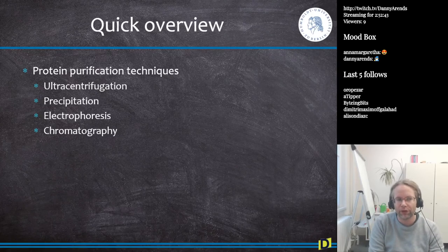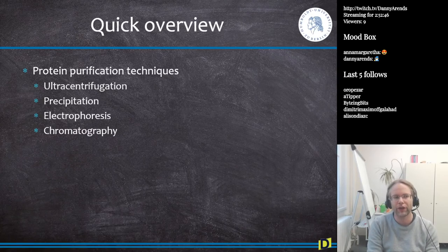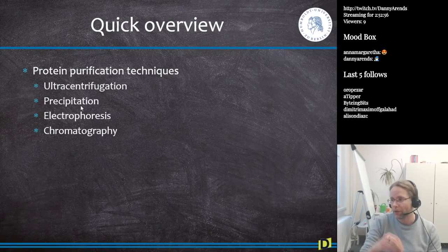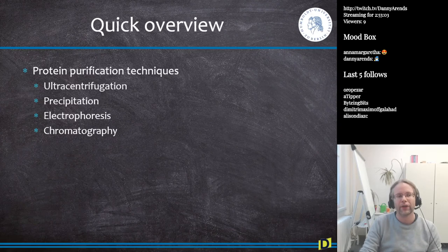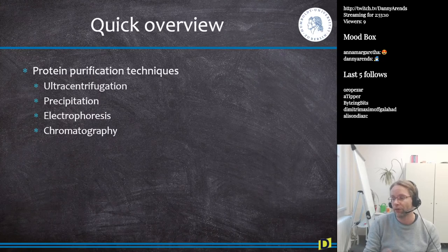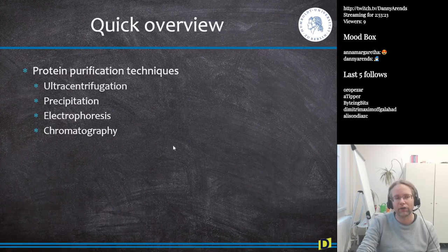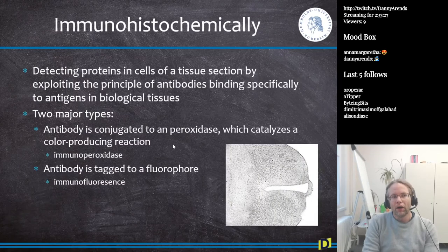To summarize protein purification: we have centrifugation — using gravity and spinning; precipitation — adding a substance so the protein comes out of the mixture; electrophoresis — pulling a protein through an electric field (which can be combined with isoelectric focusing to make a 2D gel, separating by both size and intrinsic charge); and chromatography — separating constituents by how they travel through a stationary phase.